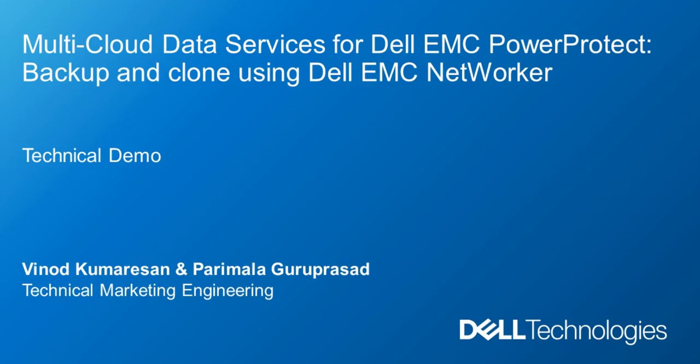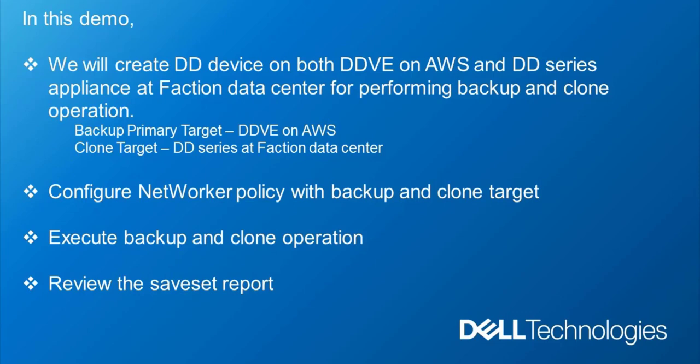Welcome to Faction use case demo. In this demo, we will create a DD device on both DDV on AWS and DD series appliance at Faction data center for performing backup and clone operations. The backup primary target is DDV on AWS and clone target is DD series at Faction data center.